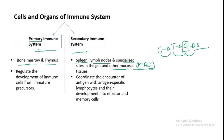The primary immune system has two organs: bone marrow and thymus. It is called primary because immune cells such as neutrophils, eosinophils, basophils, and lymphocytes develop there. These cells are part of the immune system, and their cell development occurs in the primary immune organs.